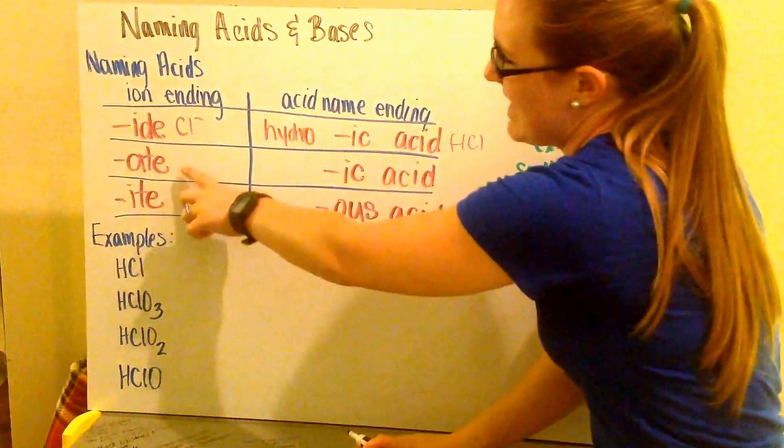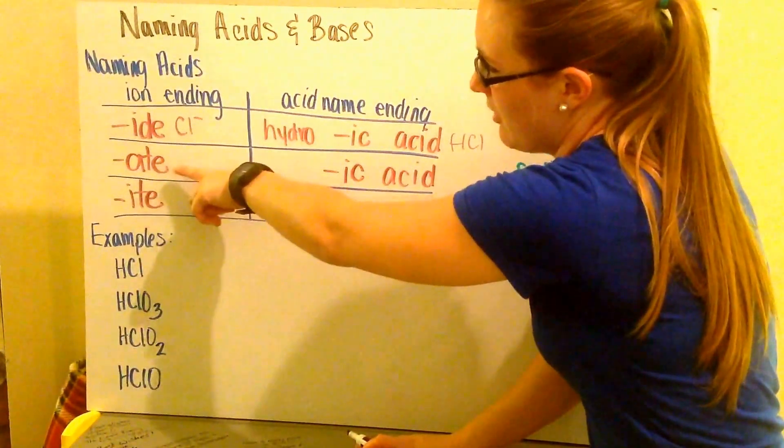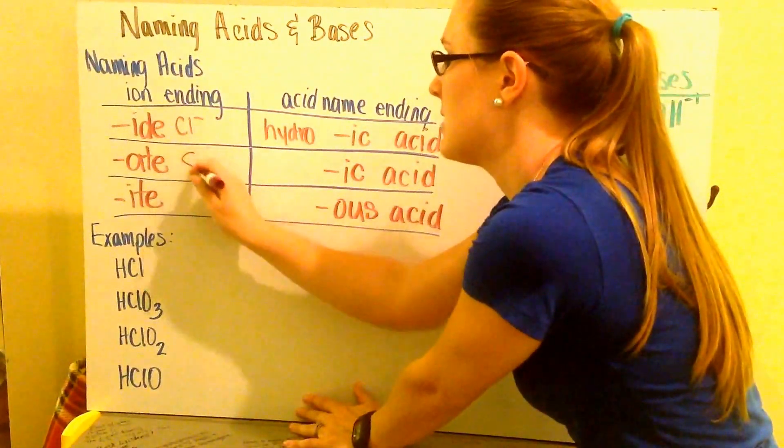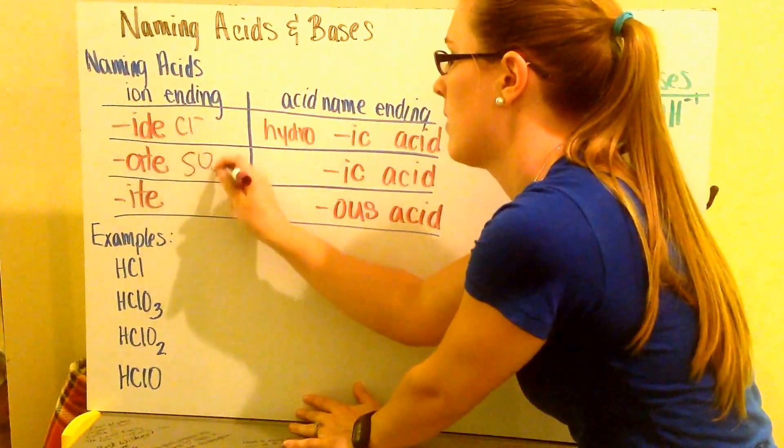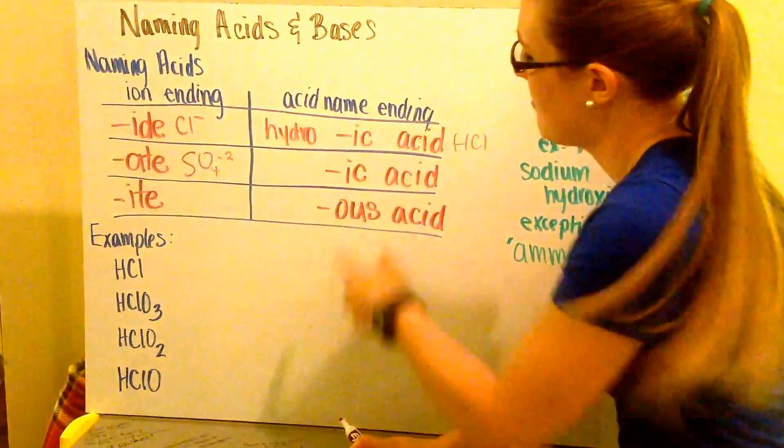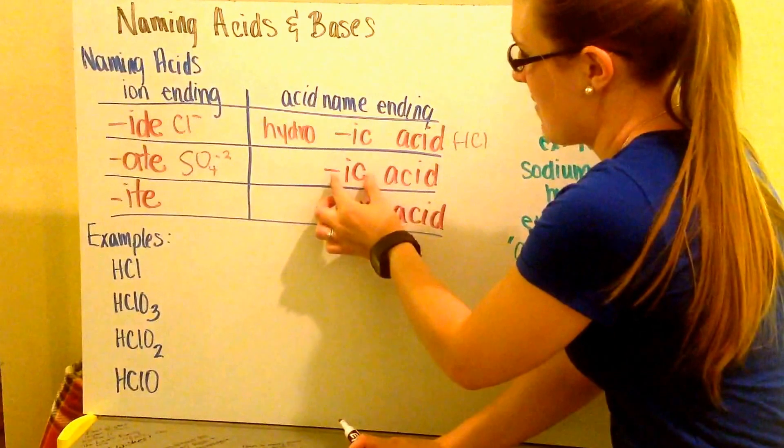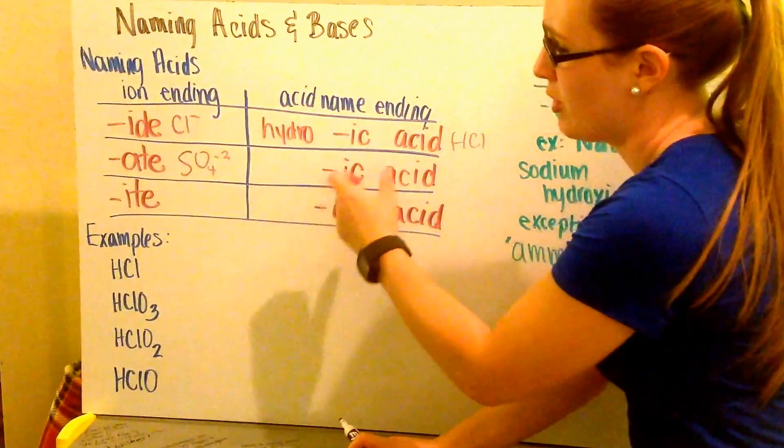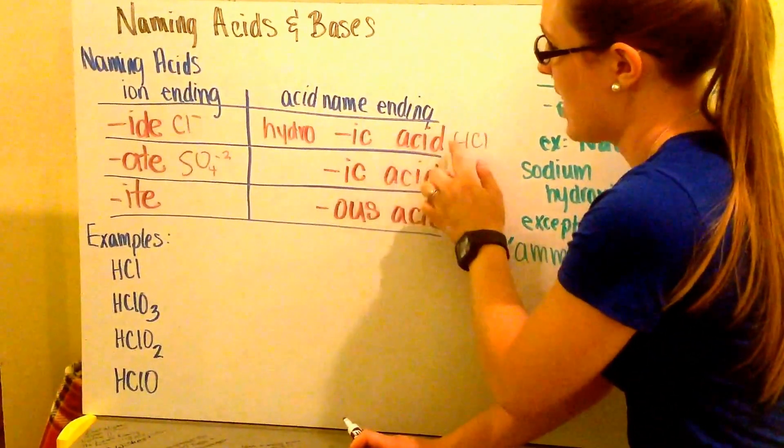Then we can have an ATE ending. Your ATE ending, an example of that would be sulfate. That's SO4 minus 2. So sulfate, that ending is going to make the IC ending on my acid. So it's going to be sulfuric acid. And notice that my acids all end in acid.